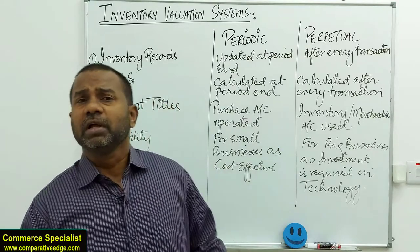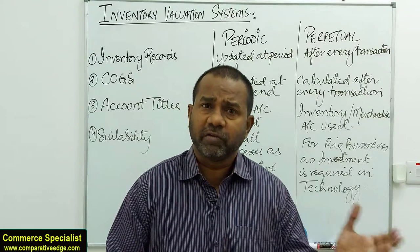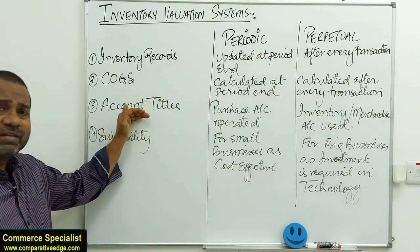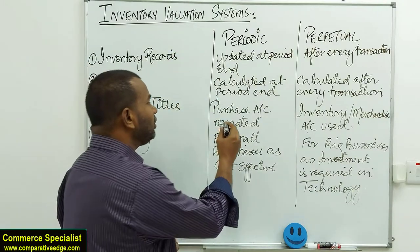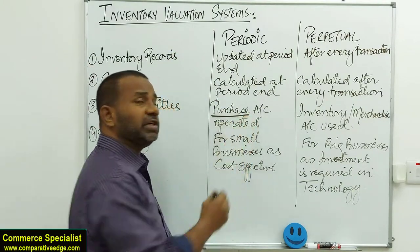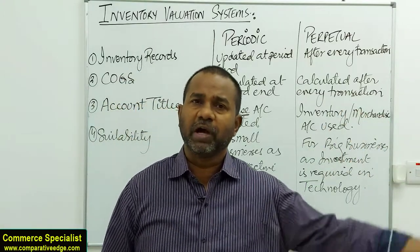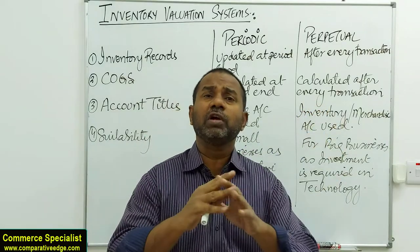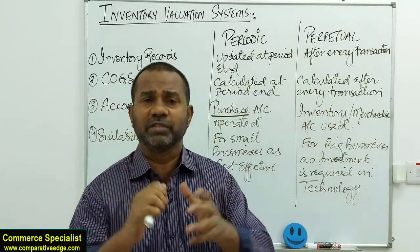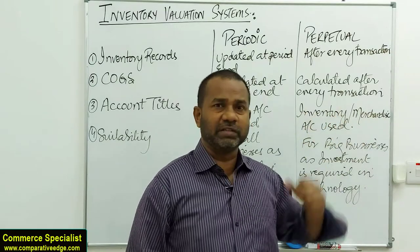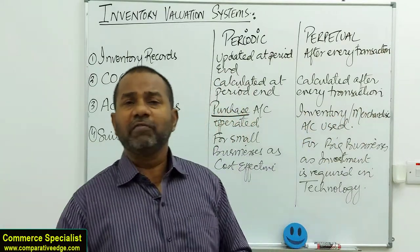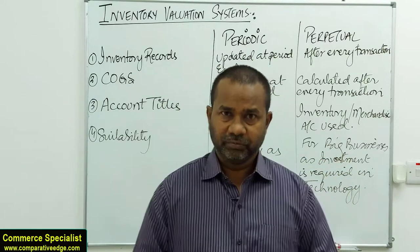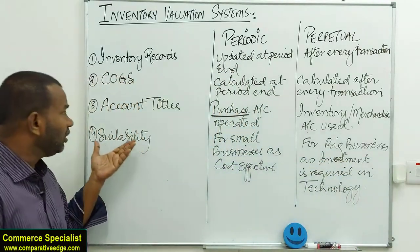Second, cost of goods sold: under periodic it's calculated at the end of the period; under perpetual it can be calculated after every transaction. Third, account titles: under periodic we use a purchases account and debit it when buying goods; under perpetual we use an inventory or merchandise account instead.